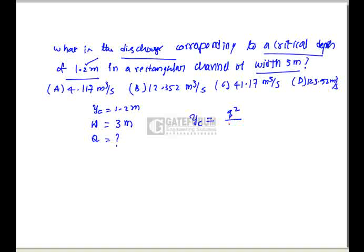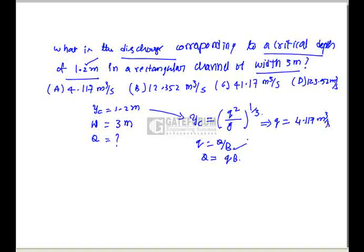For a rectangular channel, the critical depth formula is yc = (q²/g)^(1/3), where q is discharge per unit width. Putting in the values: yc = 1.2 m and solving, q = Q/b = 4.117 m³/s per meter width. Since width b = 3 m, total discharge Q = 4.117 × 3 = 12.352 cubic meters per second. Option B is correct.